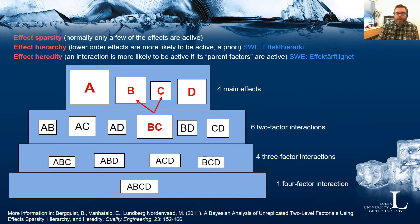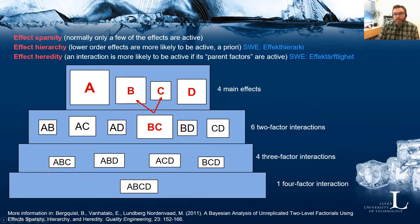The third principle, effect heredity, states that an interaction is more likely to be active if its parent factors are active. So in this case, for example, if B×C is under consideration to be active, it is more likely that it is active if both B and C as main effects are also active by themselves. Effect heredity is a useful principle when analyzing fractional factorial designs where we might have effect aliasing, so we have to decide if it is B×C or some aliased effect that we want to consider to be active.